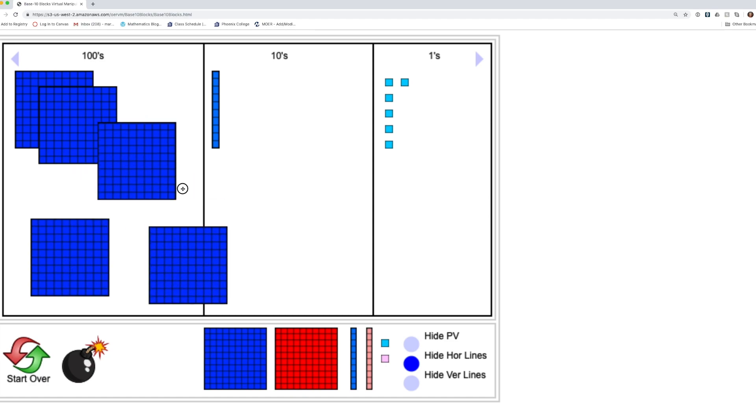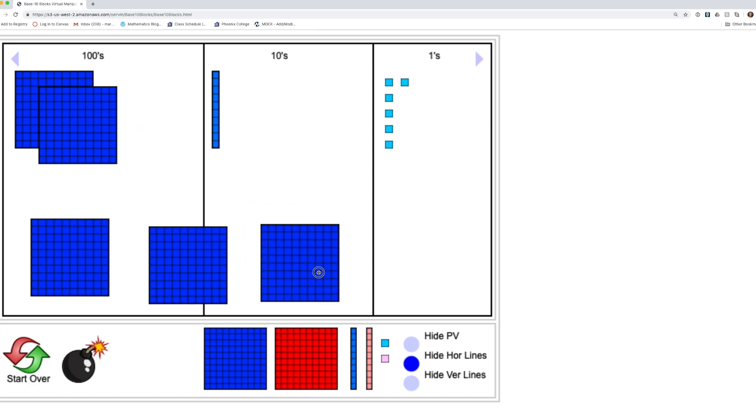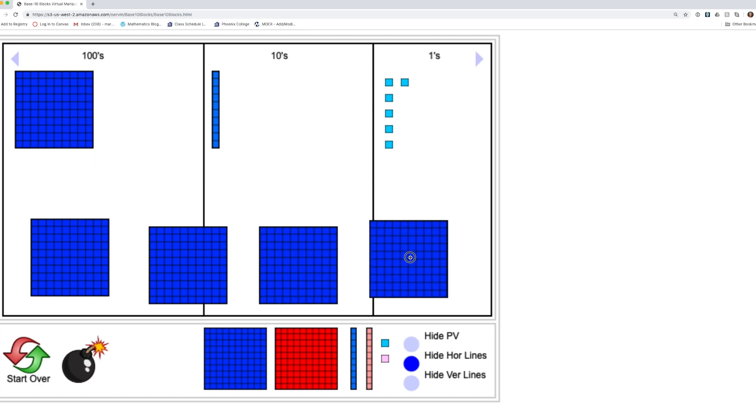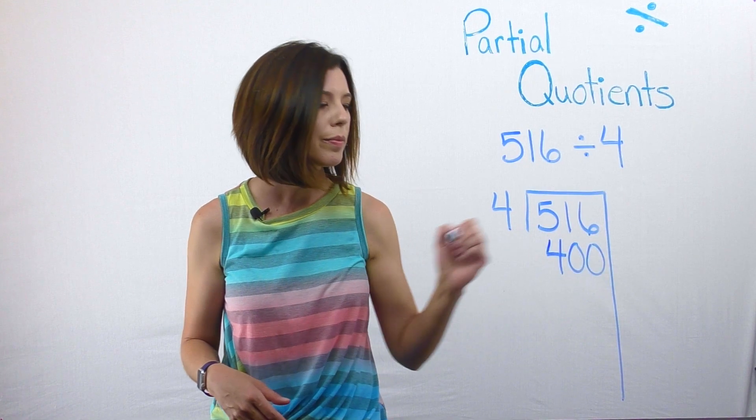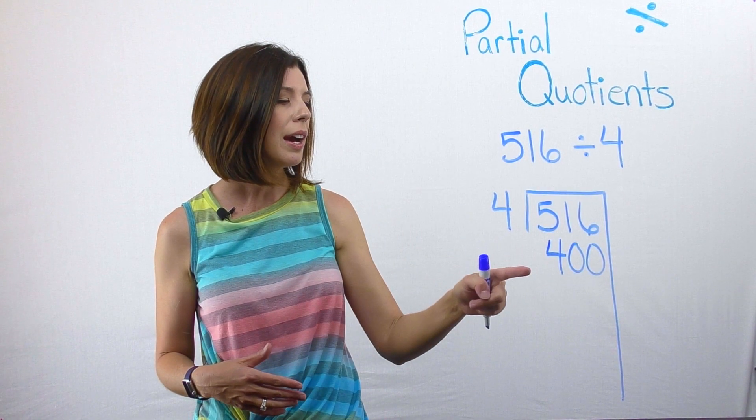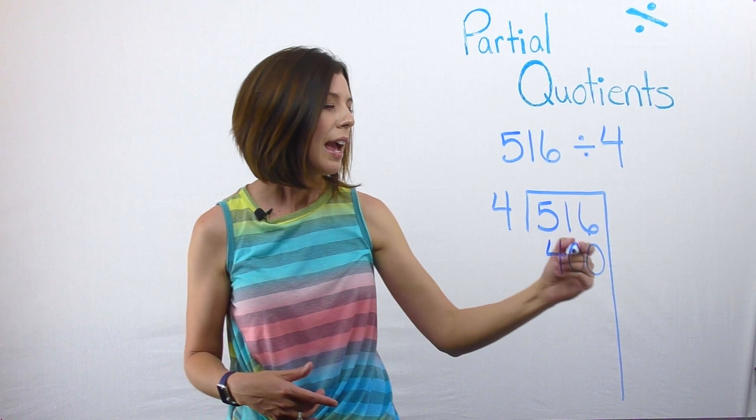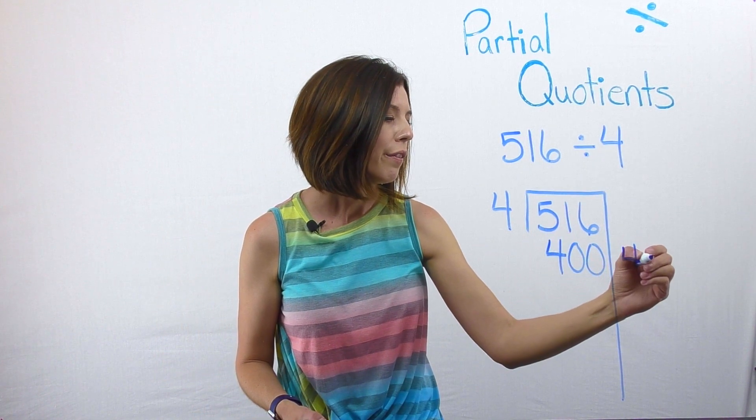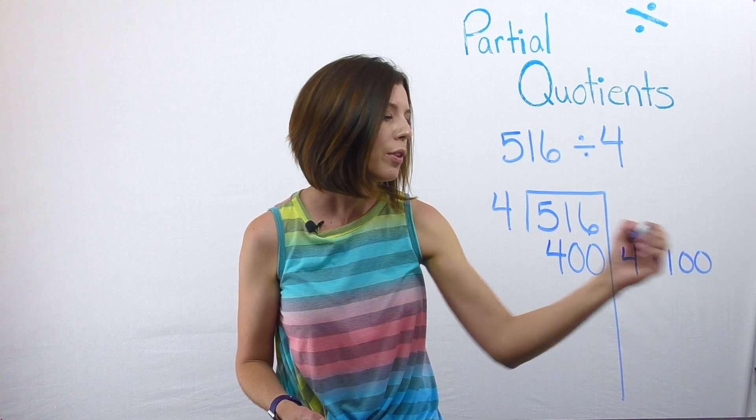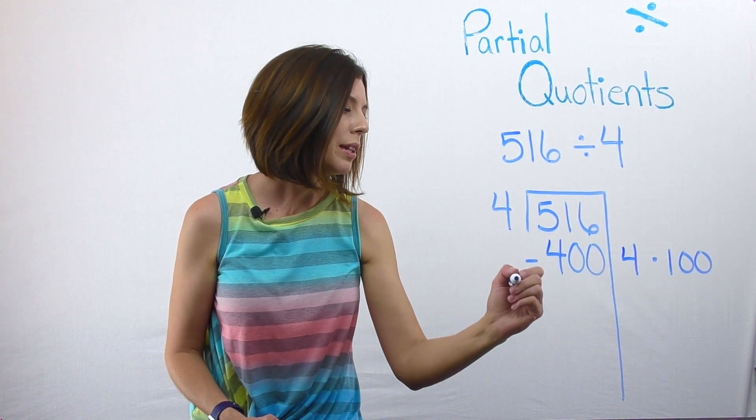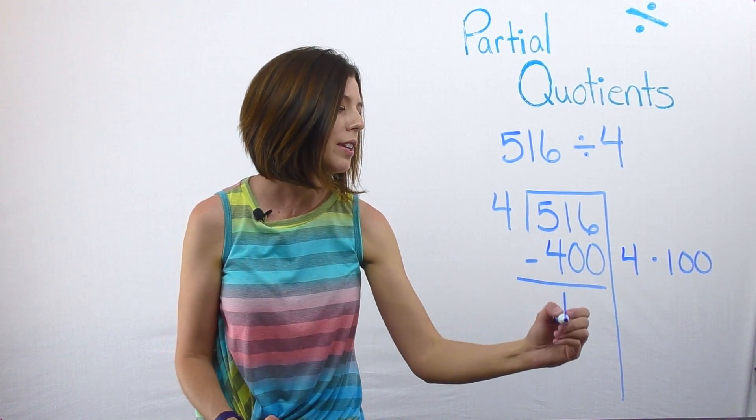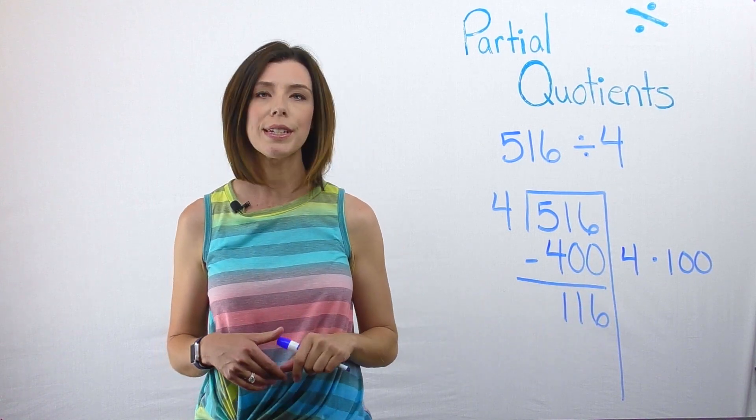Because I'm trying to see if I divide these 516 blocks into 4 groups, how many of them are in each group? So I know that I can pull out 400 for sure. In my work here, I'm going to go ahead and put 400 here. And I know that I'm taking out 4 groups of 100. And then I'm going to see what I have left. And I know I have 116 still left.